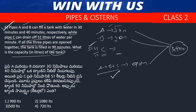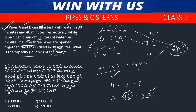LCM of 30, 40, and 90 is 360. Efficiency of A = 12, efficiency of B = 9. A+B+C combined efficiency = 4. So C drains at 4 − (12+9) = minus 17 units per minute. Since C drains 51 liters per minute, each work unit = 51 ÷ 17 = 3 liters. Total capacity = 360 × 3 = 1080 liters.